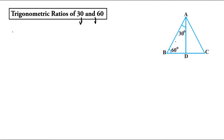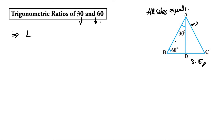We will find the trigonometric ratios of 30 and 60 degrees. In the textbook, figure 8.15 is given here, so please check that figure in your textbook. An equilateral triangle is given, meaning all sides are equal — AB, BC, and AC are all equal. Therefore, all angles are also equal: angle A equals angle B equals angle C equals 60 degrees, because this is an equilateral triangle.